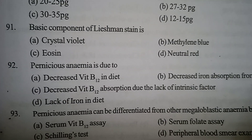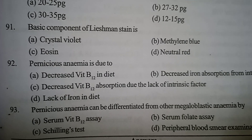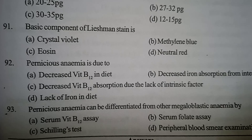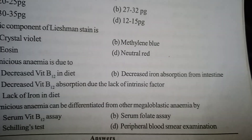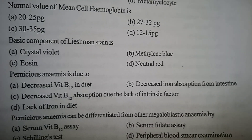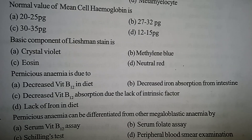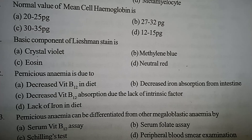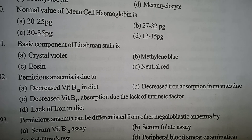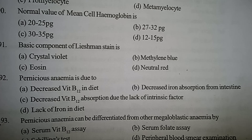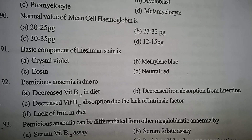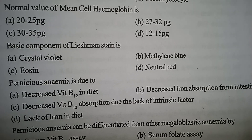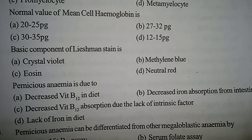Next one: pernicious anemia is due to — Option A: decreased vitamin B12 in diet. Option B: decreased iron absorption from intestine. Option C: decreased vitamin B12 absorption due to lack of intrinsic factor. Option D: lack of iron in diet. Correct answer: Option C, decreased vitamin B12 absorption due to lack of intrinsic factor.